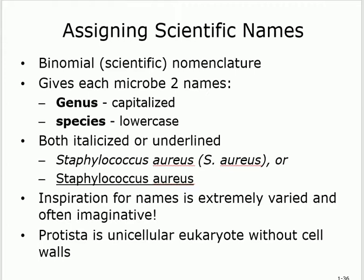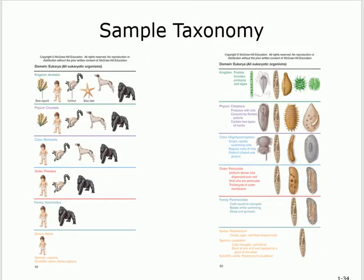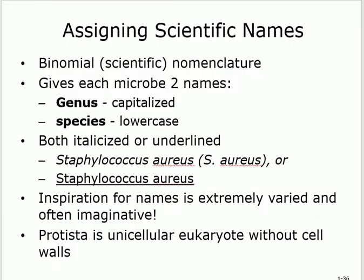You can write the full genus name or abbreviate it to the first letter (still capitalized) followed by the species name — for example, 'S. aureus.' Both forms are correct. Also note: Protista is a unicellular eukaryote without a cell wall. It has a nucleus and nuclear membrane (eukaryote) but is unicellular. That concludes chapter one.